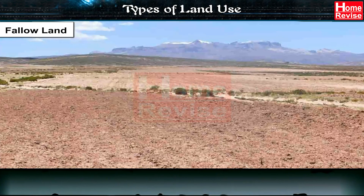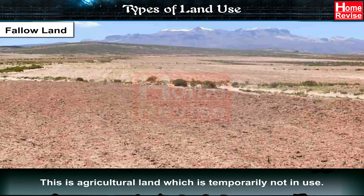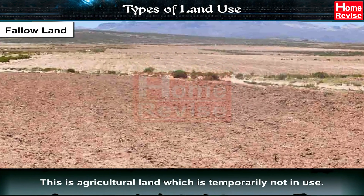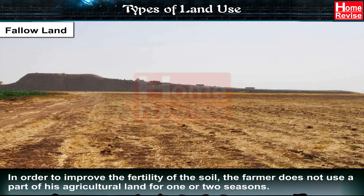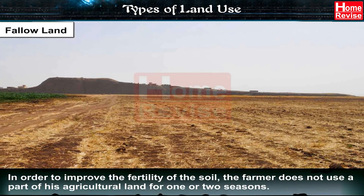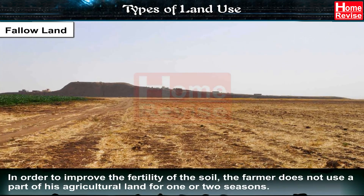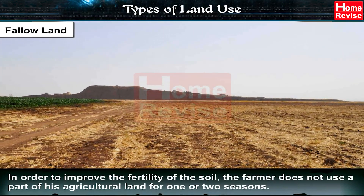Fallow Land: This is agricultural land which is temporarily not in use. In order to improve the fertility of the soil, the farmer does not use a part of his agricultural land for one or two seasons.